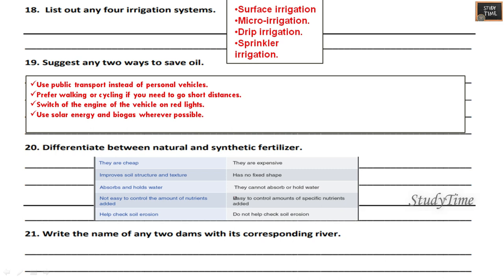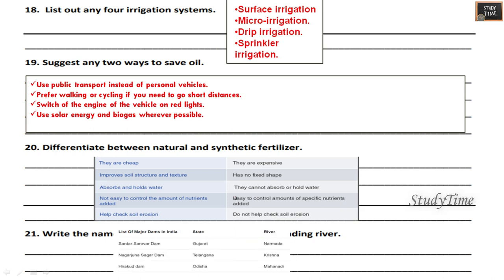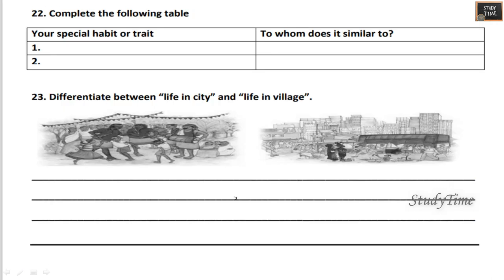Write the name of any two dams with their corresponding rivers — a list of major dams, their states and rivers is provided. Next, complete the following table: write your special habit or trait and to whom it is similar. For example, if you have a habit of eating with your left hand, write whether it is similar to your brother, sister, or another family member.